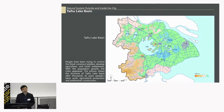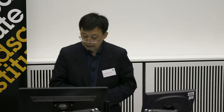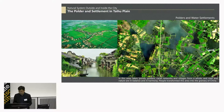However, over the past thousands of years, people have been trying to control the floods, construct the polders, develop agriculture, and build settlements. With the population growth, cities appeared. The picture shows the structure of Taihu Lake Basin. After thousands of years of people's labor, agriculture production, and settlement construction, people transformed this area into the granary of China.